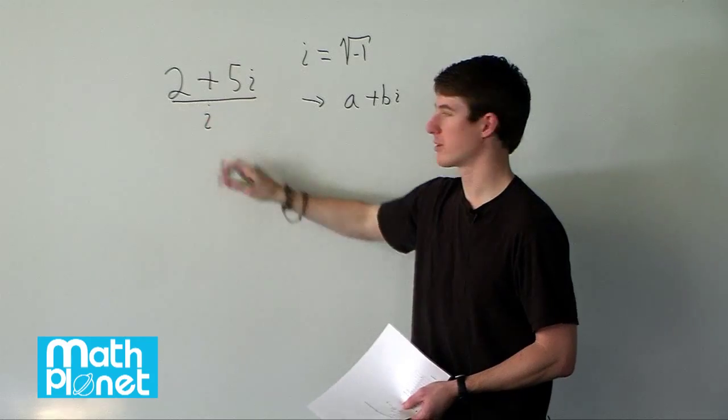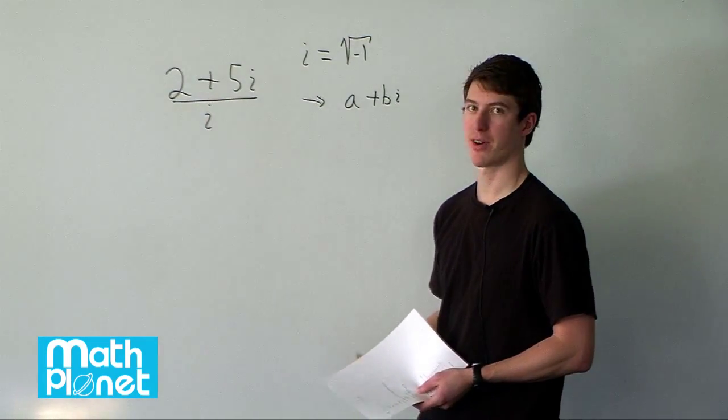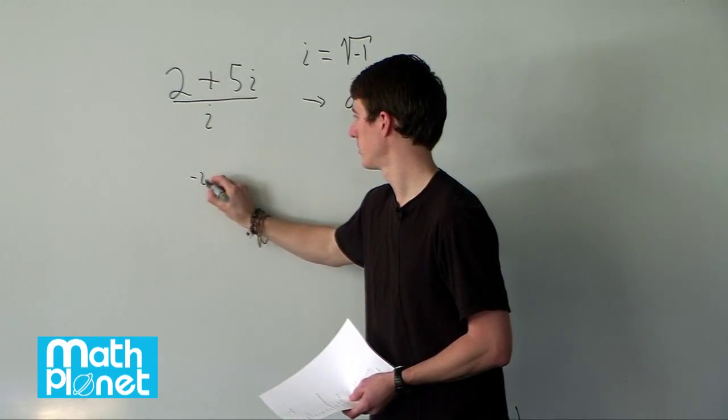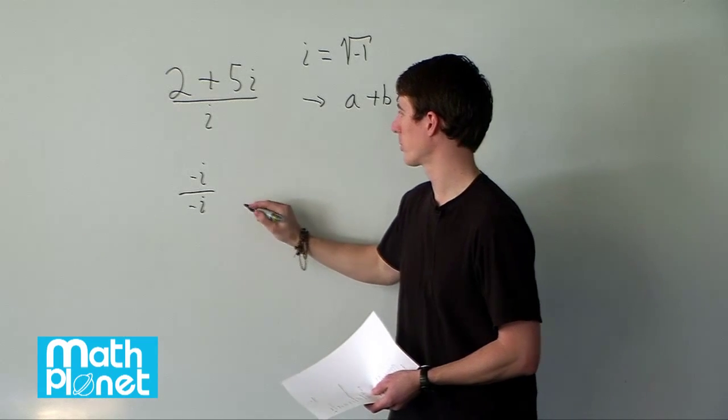So we can take this expression, multiply by 1, or 1 in this case is negative i divided by negative i. So we're not changing the expression at all, we're just changing what it looks like.